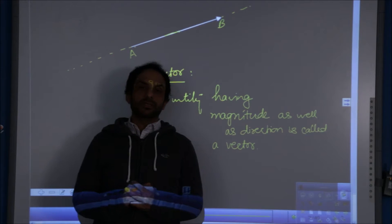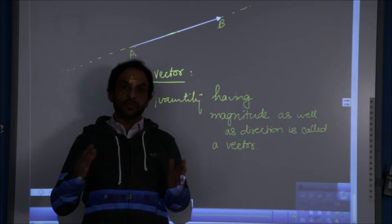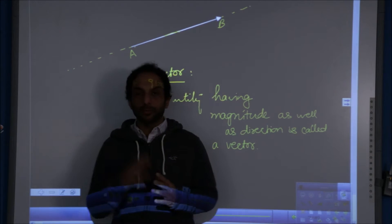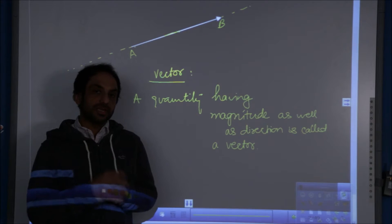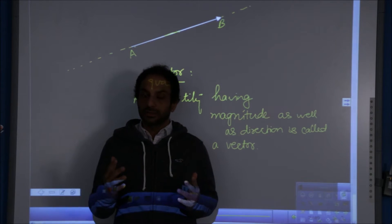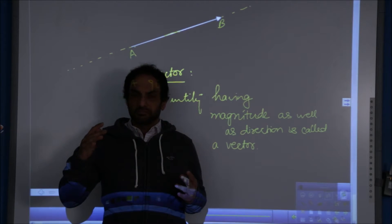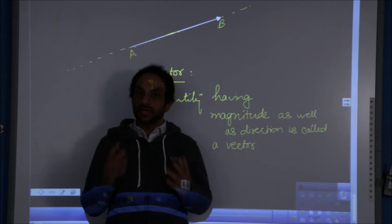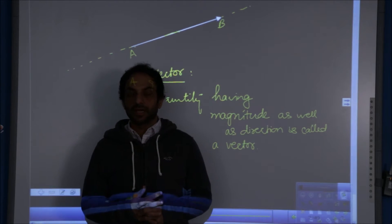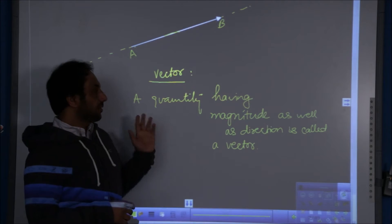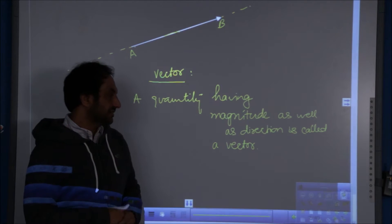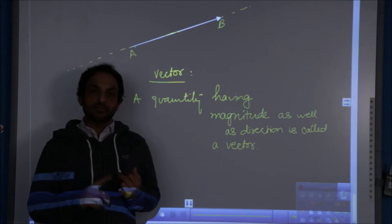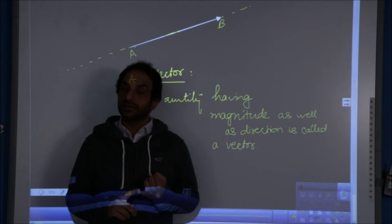A segment is the fixed portion of a line. But imagine that one side of the segment has an arrowhead — then it will look like a ray. This ray is actually the vector. In physics, we say the quantity having magnitude as well as direction is called a vector. So a vector is something which contains both magnitude and direction.